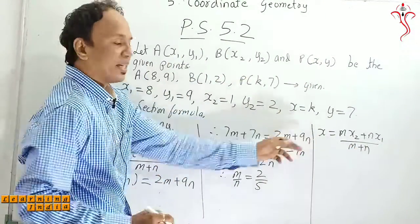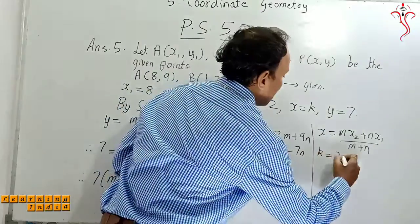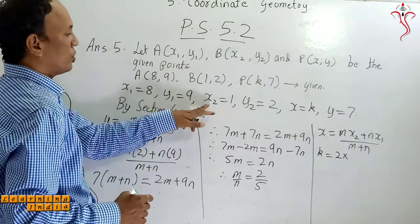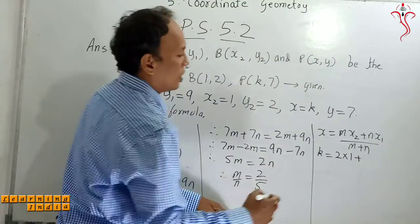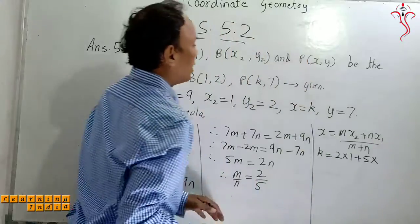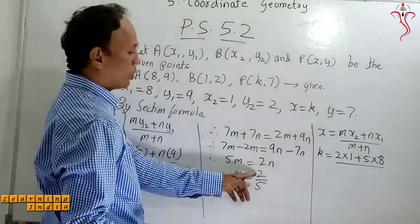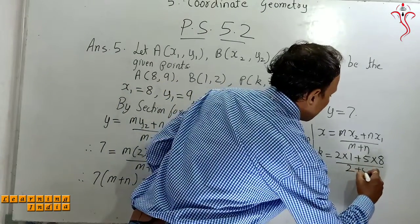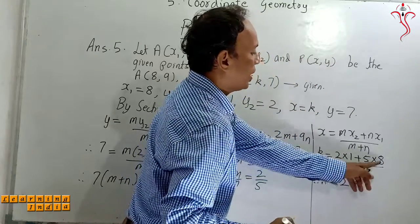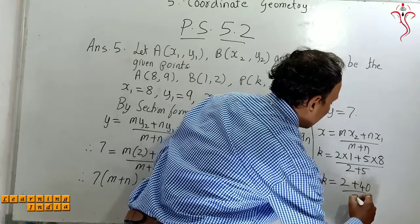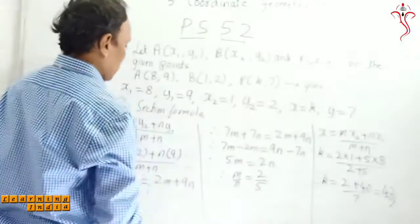X value is k, so k is equal to M value is 2, so we can write here 2 multiplied by X2. X2 value is 1, so you can put here 1 plus N value is 5, so you put here 5 multiplied by X1. What is the value of X1? 8. Put here as 8 upon M plus N, which is 2 plus 5. Now put here 2 plus 5. Therefore k is equal to 2 multiplied by 1 is 2 plus 5 into 8 is 40 upon 2 plus 5 is 7. So getting answer as 42 upon 7, which is equal to 6.